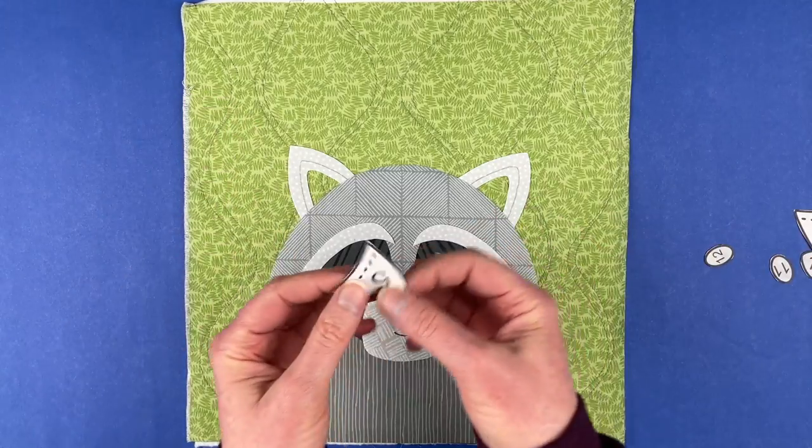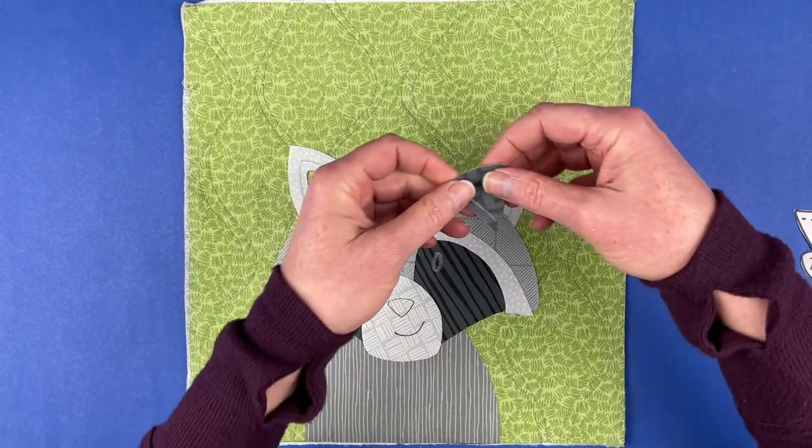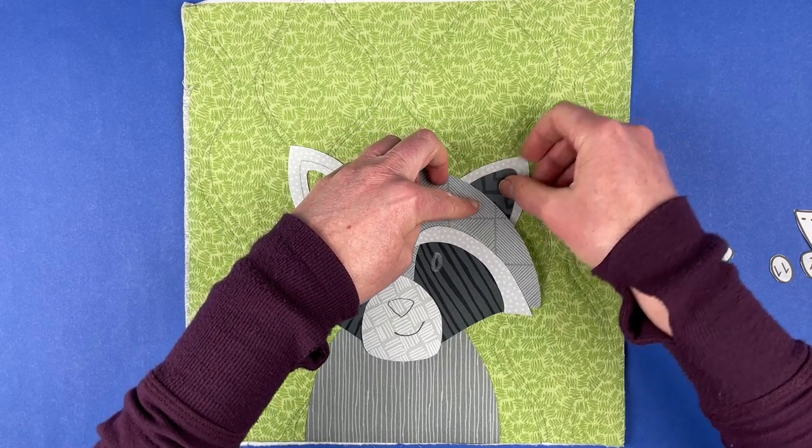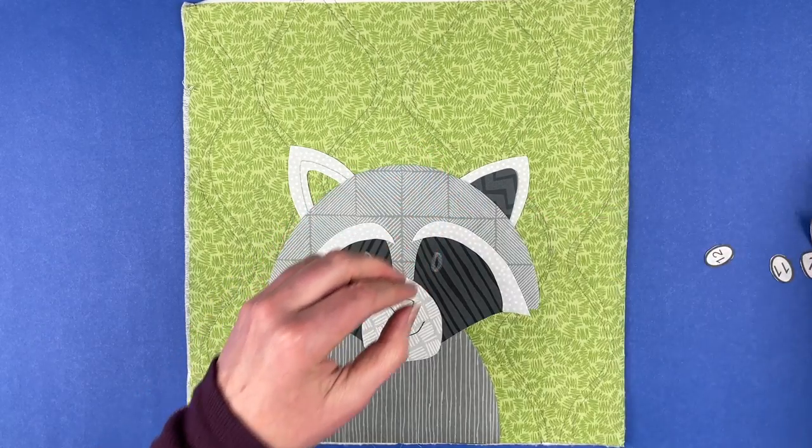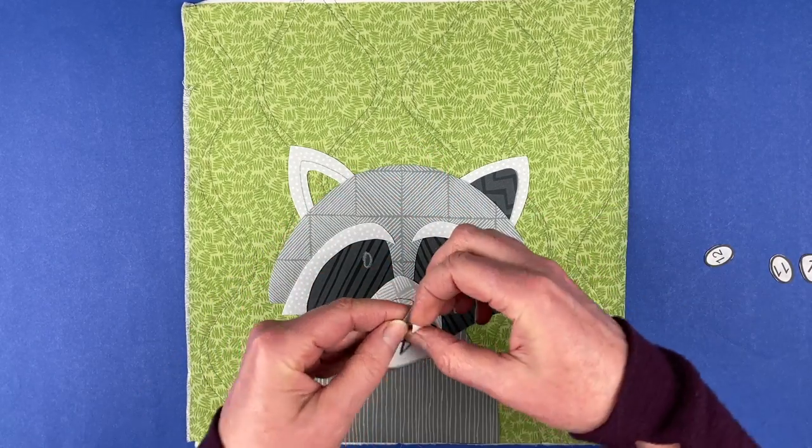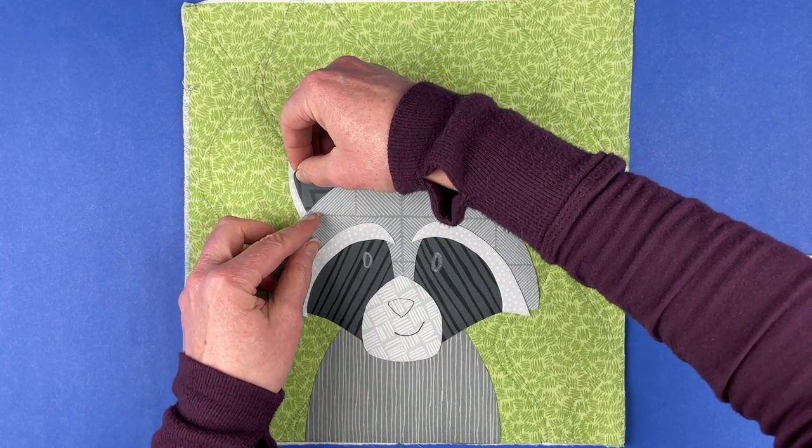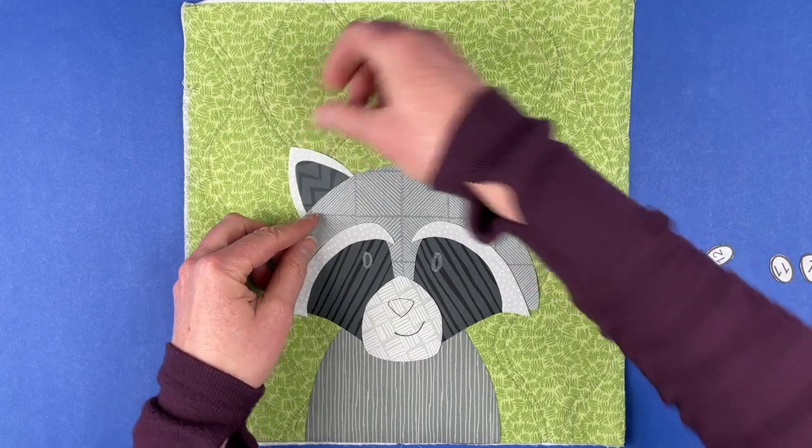And behind the head on this side. And then we've got some darker inner ear pieces. Because raccoons have almost white on their outer ear. But a very dark inner ear. And do the same thing on this side. Get that tucked in there. That looks great.